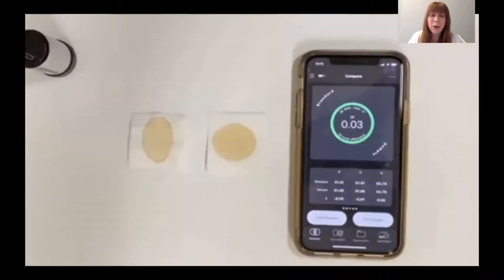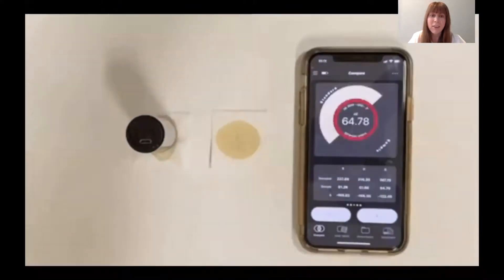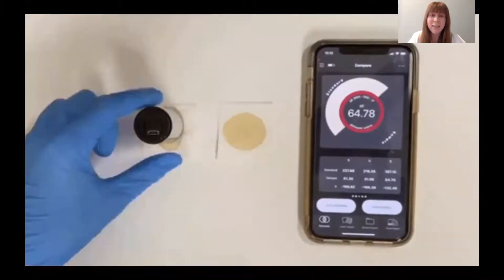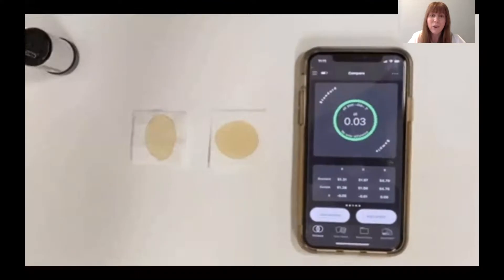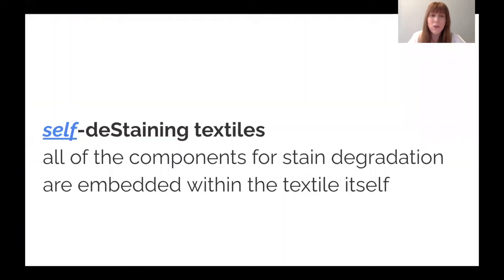We use a colorometer instrument to measure color intensity, and we calculate the stain degradation based on those measurements. We call these self-destaining textiles because all of the components for stain degradation are embedded within the textile itself.